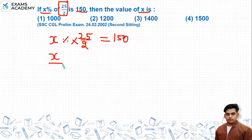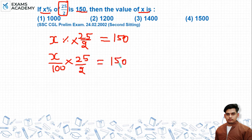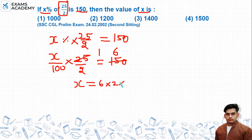To remove the percentage, x% becomes x over 100, multiplied by 25 by 2, which equals 150. Now after cancellation, it goes to 6. Multiplying: 6 into 2 into 100 gives us 1200. So the correct option is option number 2, which is 1200.